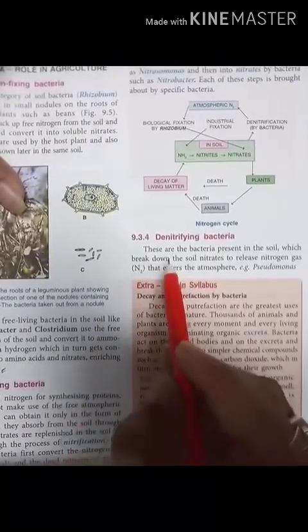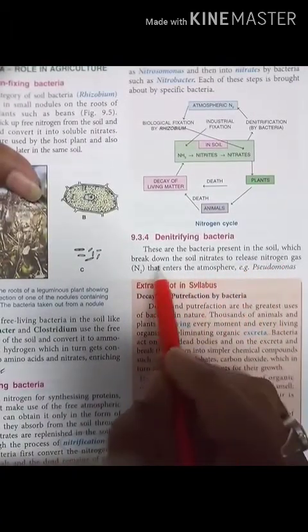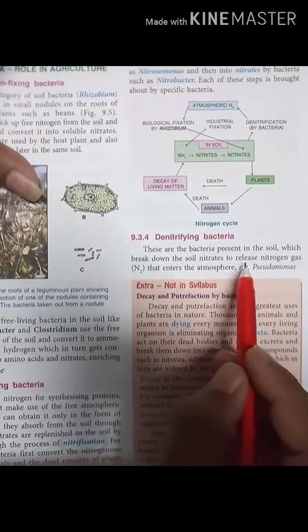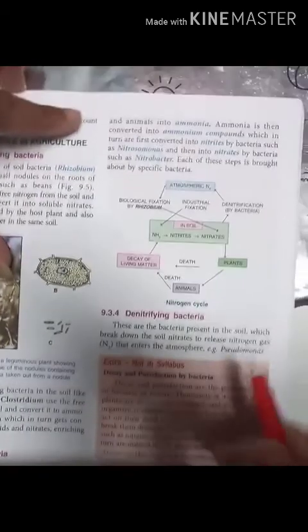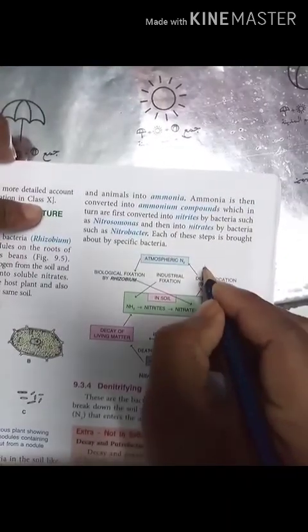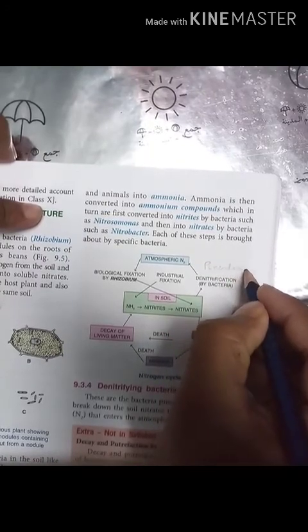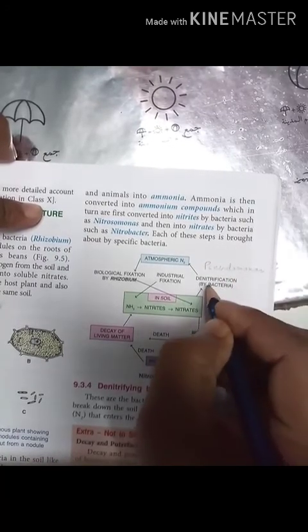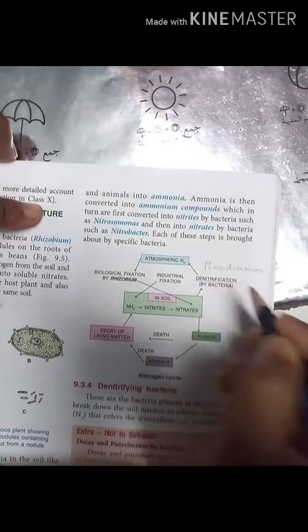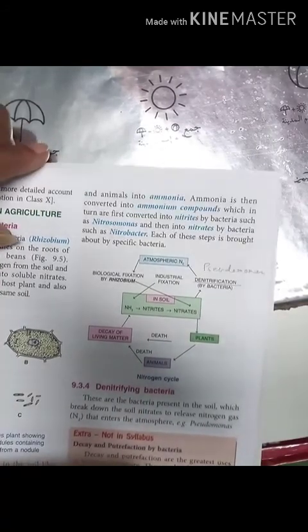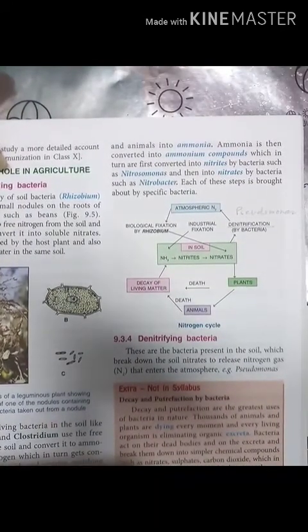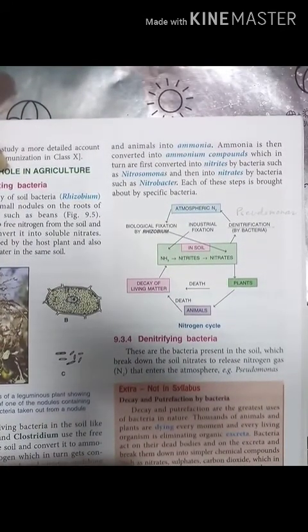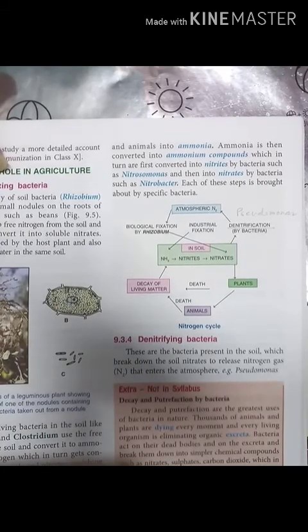Certain bacteria in soil break down soil nitrates to release nitrogen gas that enters the atmosphere. This role is carried out by Pseudomonas bacteria, which perform denitrification. We will study the remaining part in the next session. Till then, have a good day — be at home, be safe.